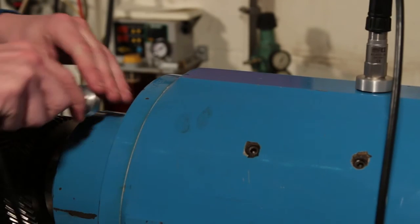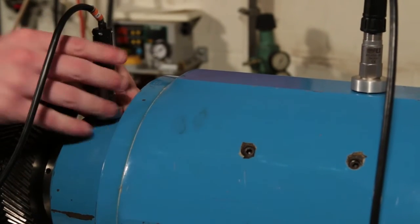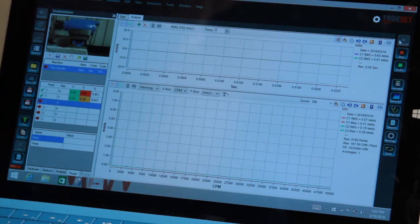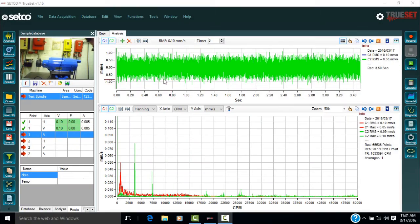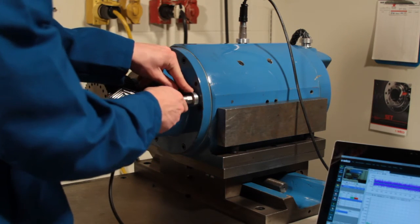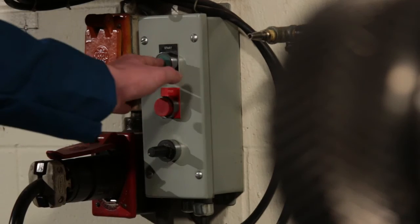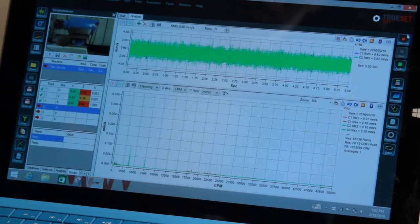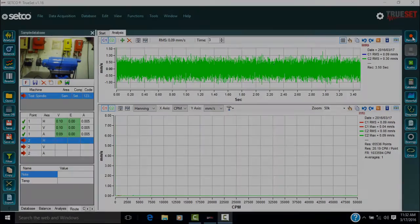Stop the equipment and move the accelerometer from horizontal to vertical to match the next axis in the route. Start the equipment up again and press record again. The data is displayed on the two graphs. Once again, stop the equipment. Move the accelerometer from vertical to axial to match the third axis in the route. Then, restart the equipment and select the record function. The data is shown again on the graphs.